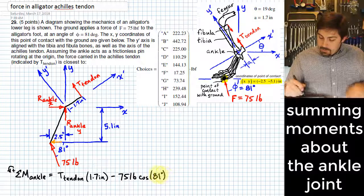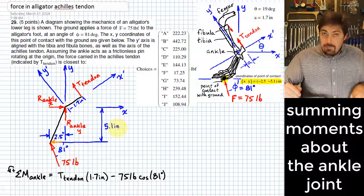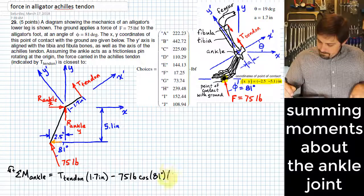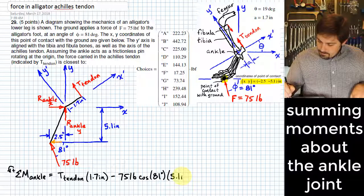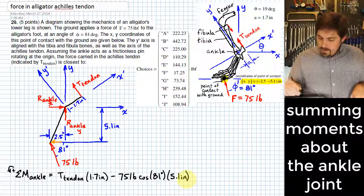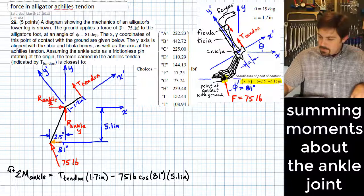Next, we need to multiply this by how far it is from the ankle, so that would be 5.1 inches. And that takes care of that horizontal component.